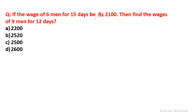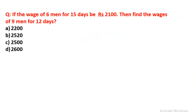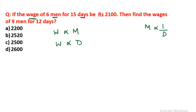Next question: If the wage of 6 men for 15 days is 2100, find the wage of 9 men for 12 days. Here the terms are wage, men, and days. The relationship between wage and men is directly proportional — more men means higher total wages. The relationship between wage and days is also directly proportional — more days means higher wages. So we use the equation: M1 × D1 / W1 = M2 × D2 / W2, where W here is wage.